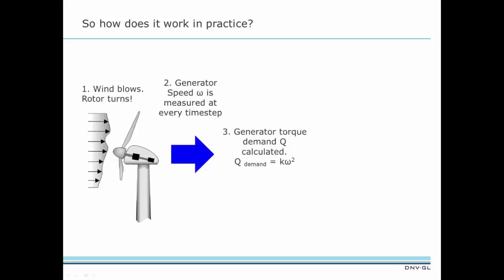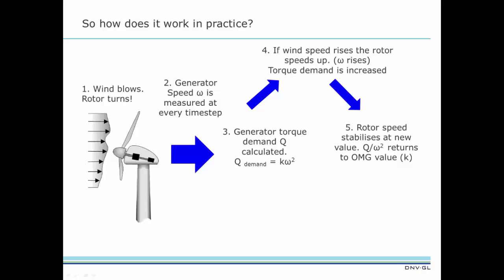If the wind speed rises, the rotor speeds up. This means the torque demand value will also increase. The effect of this increased torque demand is to stabilize the rotor speed at a new, slightly higher value.